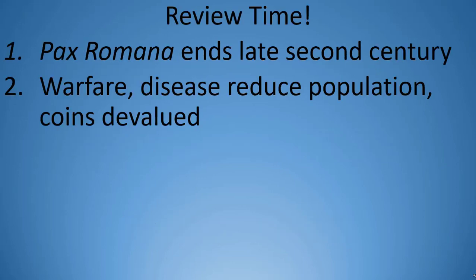Time for another review. First, the prosperity of the Pax Romana would come to an end in the late 2nd century, coinciding with political problems like the volatile reign of Commodus, the military monarchy of Septimius Severus, and the chaos of the mid-3rd century. Second, warfare and disease began whittling away Rome's population, and coinage became so devalued that payments were beginning to be made in goods rather than money.